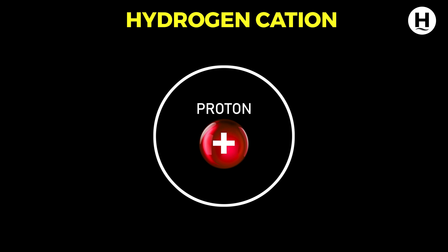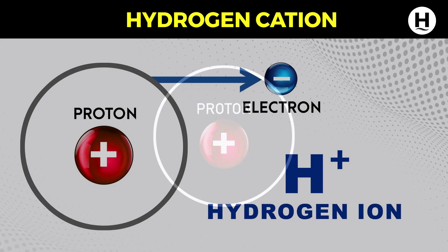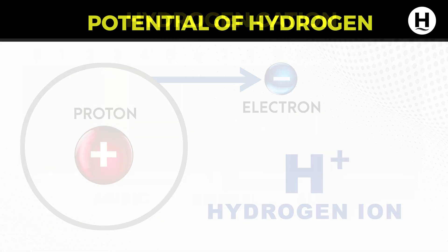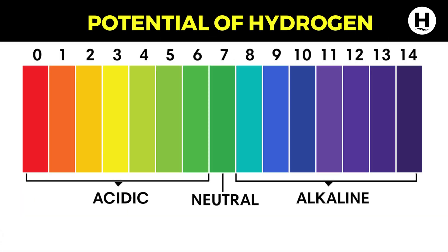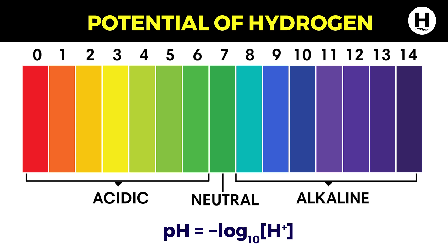This positive ion is called the hydrogen cation, generally called the hydrogen ion with a positive charge, represented as H+. It plays a bigger role in pH measurements. pH means the negative logarithm of the hydrogen ion concentration — the more the hydrogen ions, the more acidic the solution is.